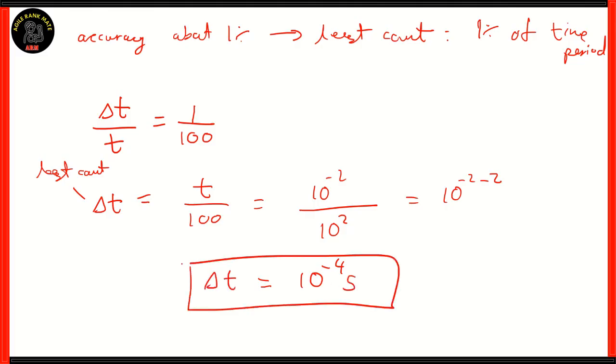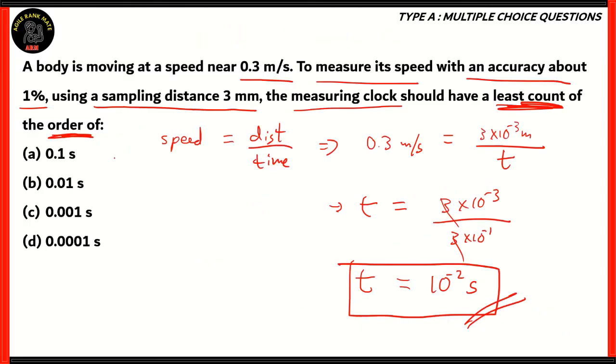So, delta T, which is the least count, is equal to 10 raised to minus 4 seconds. Now, what does 10 raised to minus 4 mean? That means 1 by 10,000, which, when it comes to decimals, comes out to be 0.0001 seconds. So, therefore, among the following options, it is clear that option D is the correct option.